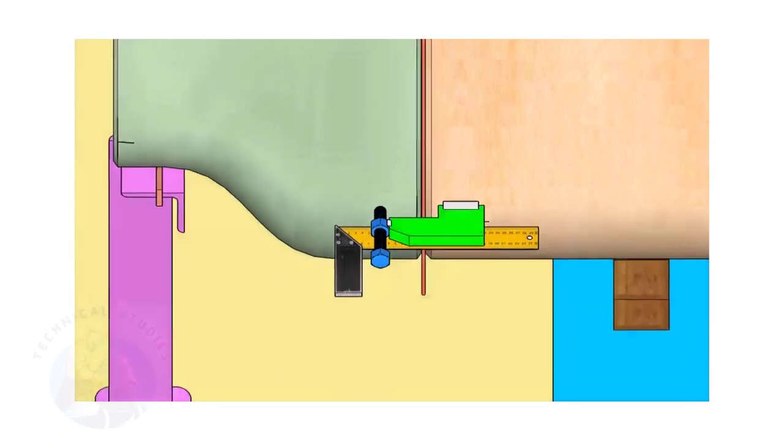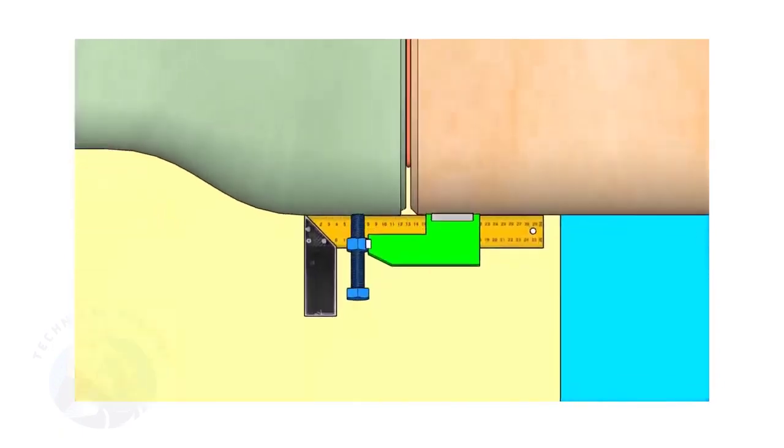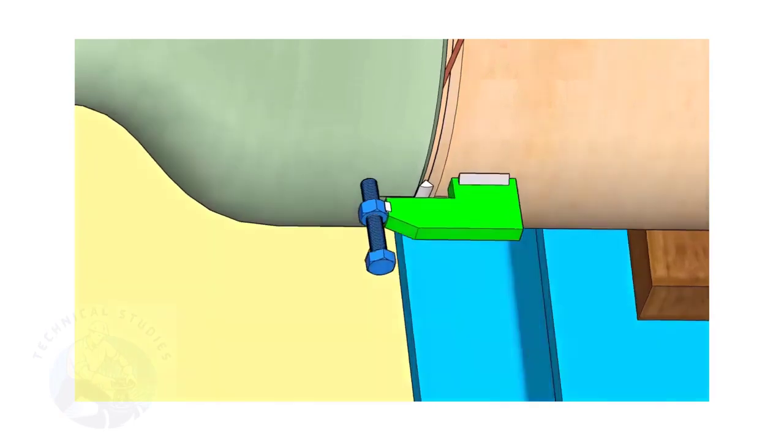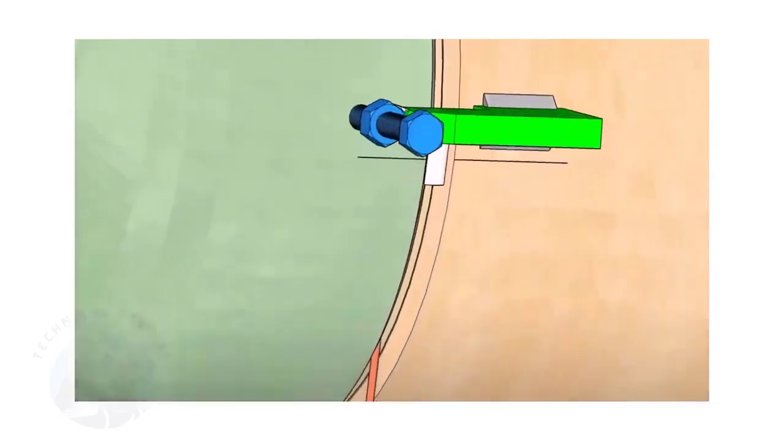Correct the straightness of the joint on both sides. If required, remove the gap rod. Tack weld on both sides.